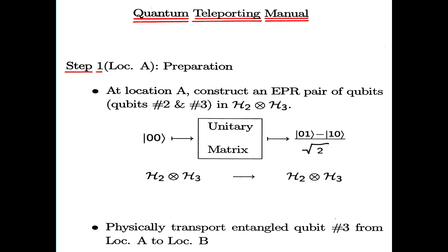Step one of the teleportation manual takes place at location A. At location A, we construct an EPR pair of qubits, qubits number two and number three, living in their separate Hilbert spaces, H2 and H3, and living collectively in H2 tensor H3. And to do so, we use a unitary transformation. And later in the course, we'll show you how to do this. The next thing we do is physically transport the right qubit from location A to location B, leaving the left qubit, qubit two, at location A.